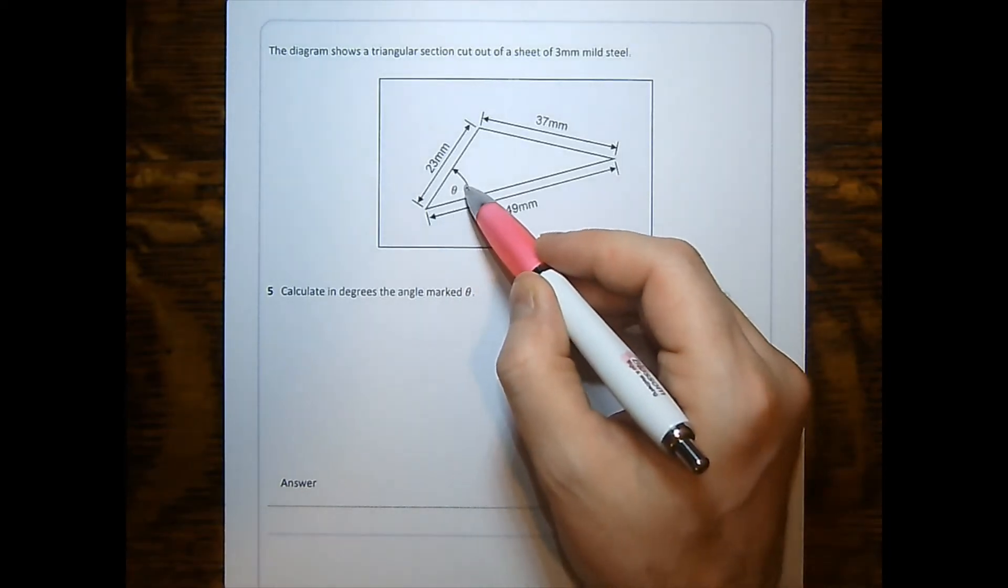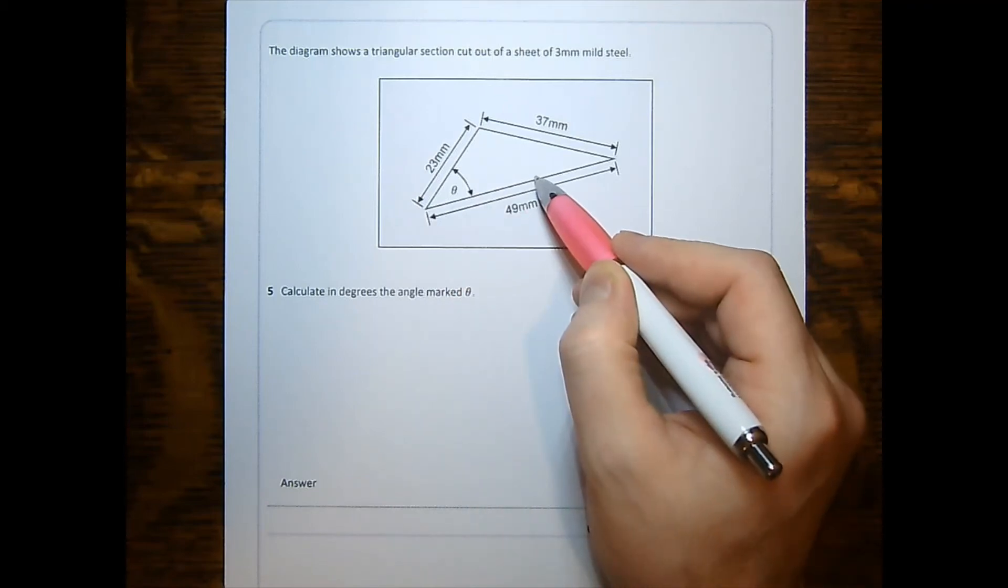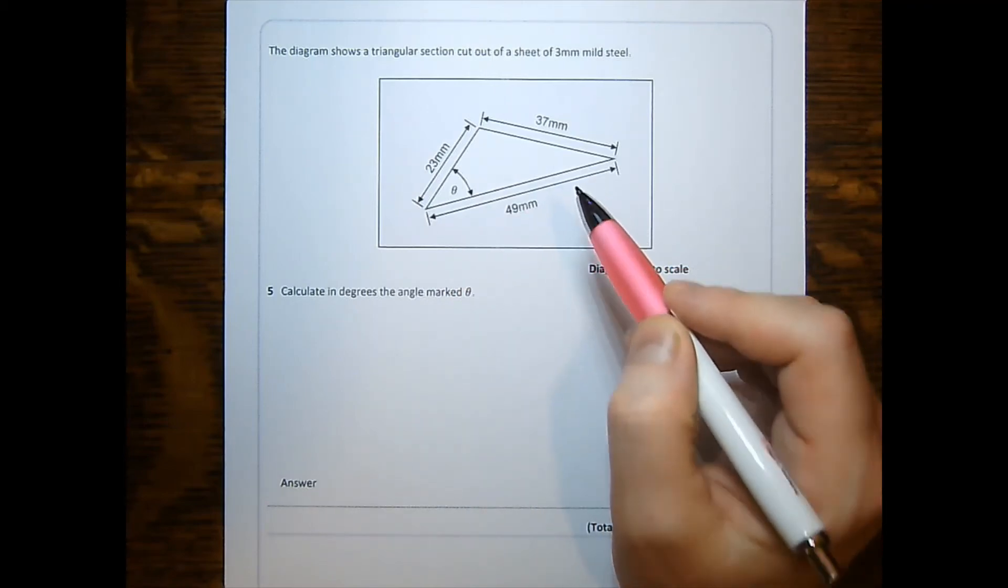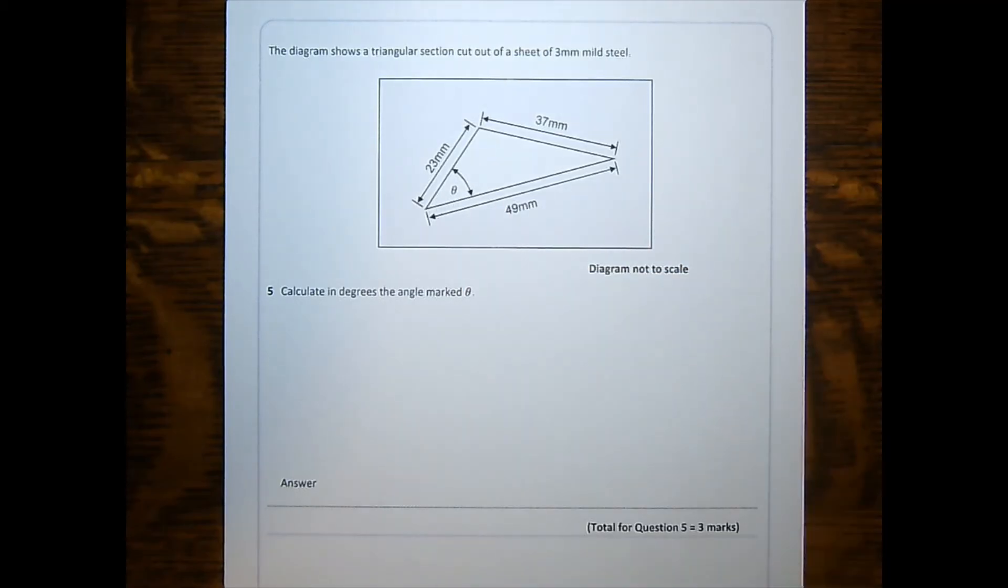In question five, we're looking for this angle and it's an included angle between two sides. Therefore, we know we're using the cosine rule. However, because we're looking for an angle, we need to use the version of the formula that is not provided.